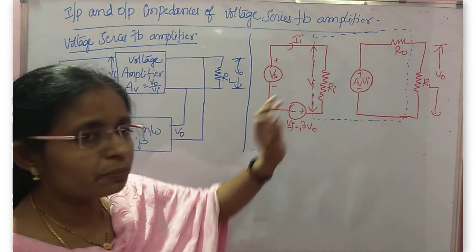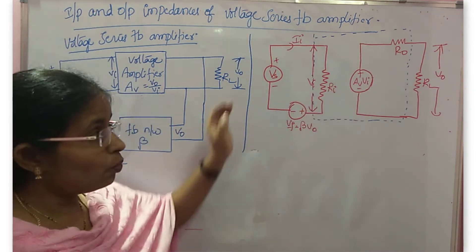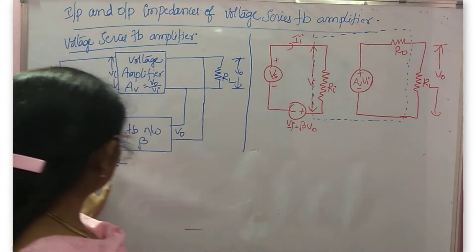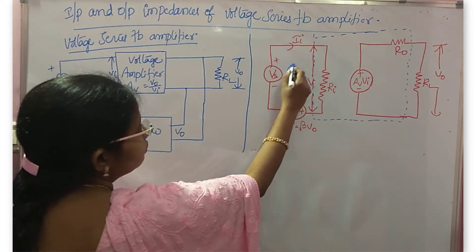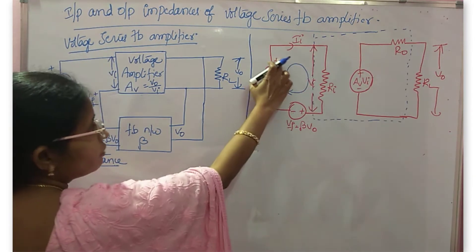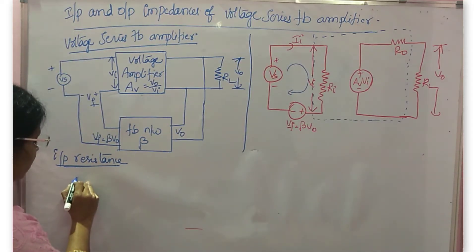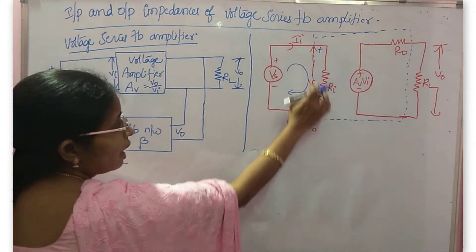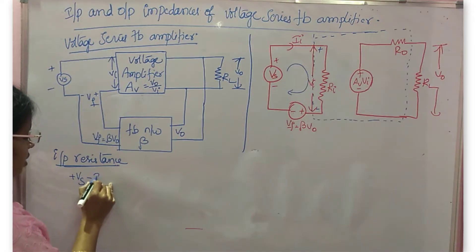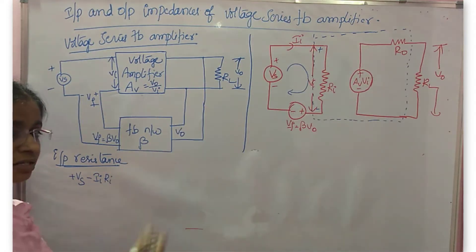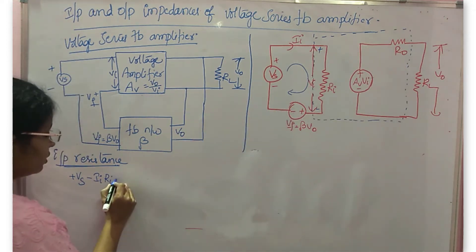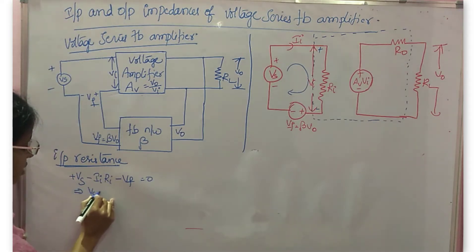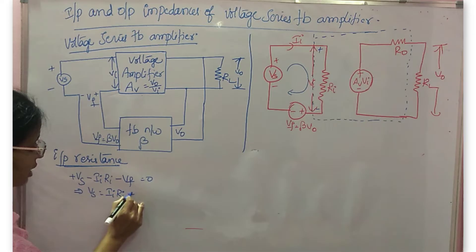What is actually Ri? Ri is the input resistance of the voltage amplifier. Now, what is the input resistance of the total voltage series feedback amplifier? For that, now write the KVL. So let us start from the second terminal: plus Vs, and then this is plus and this is minus, so minus Ii·Ri, or you can write it as Vi, minus Vf is equal to 0.